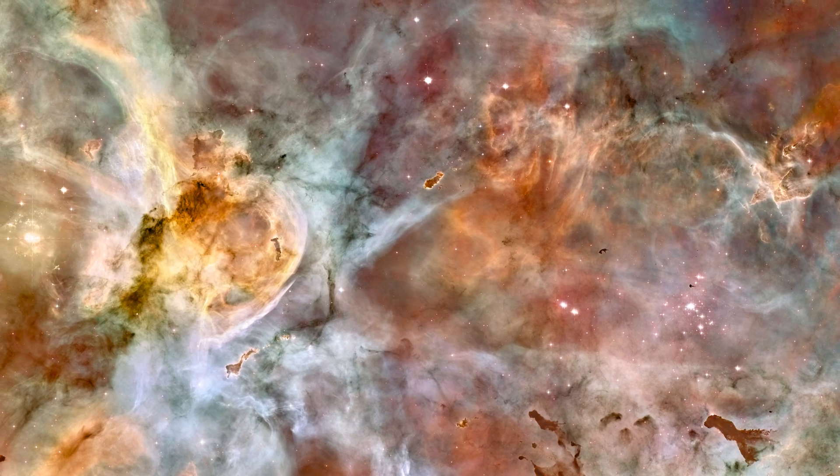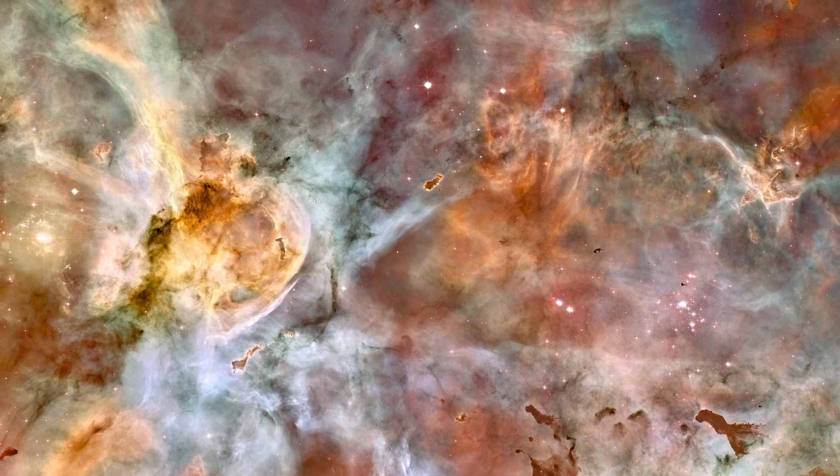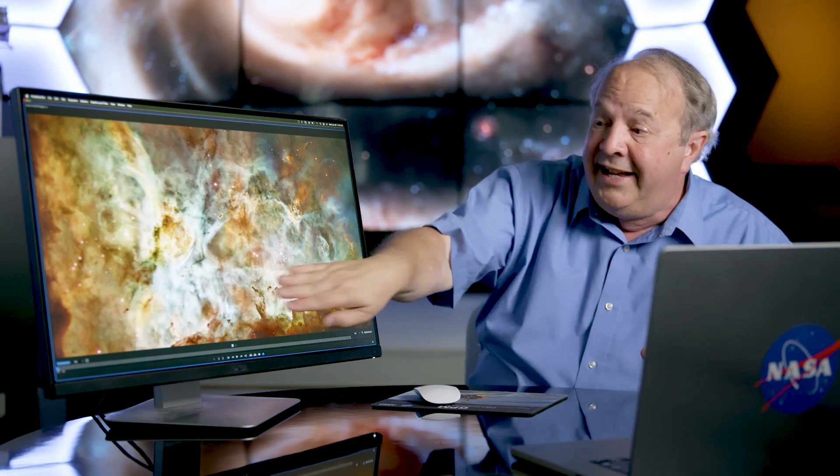So this is an image you can download from the Hubble site and it's got enough data and depth in it you can print it out to go on your wall. That's how many pixels it's got in it. And you can download it on a computer and just zoom in and see the kind of detail you saw in Mystic Mountain anywhere else in this mosaic.